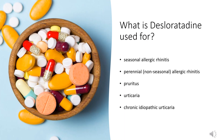What is desloratadine used for? It is used for the relief of symptoms of seasonal allergic rhinitis, perennial non-seasonal allergic rhinitis. Desloratadine is also used for the symptomatic treatment of pruritus and urticaria (hives) associated with chronic idiopathic urticaria.